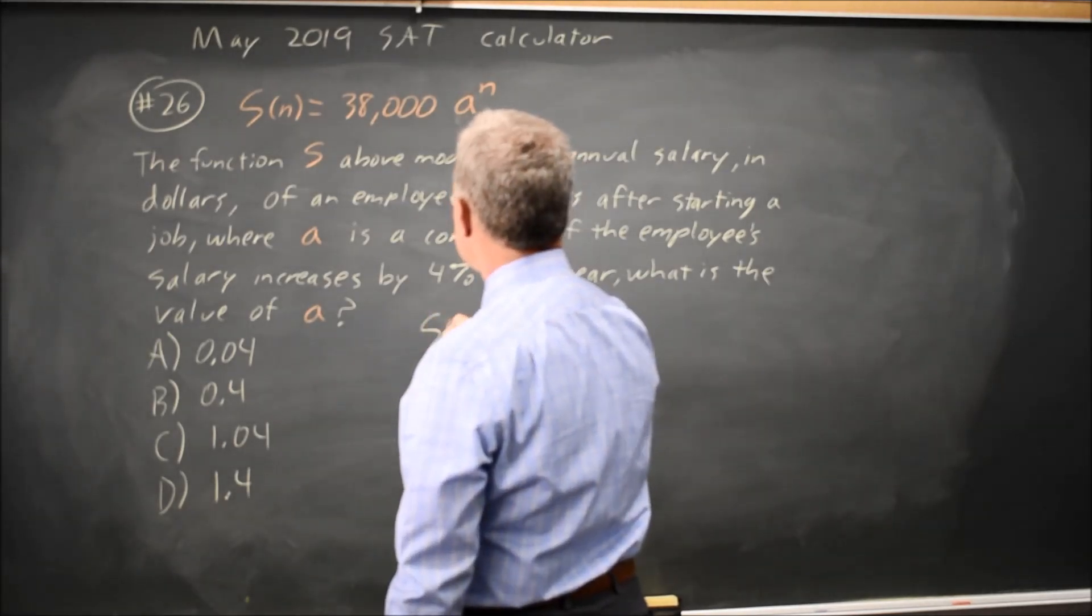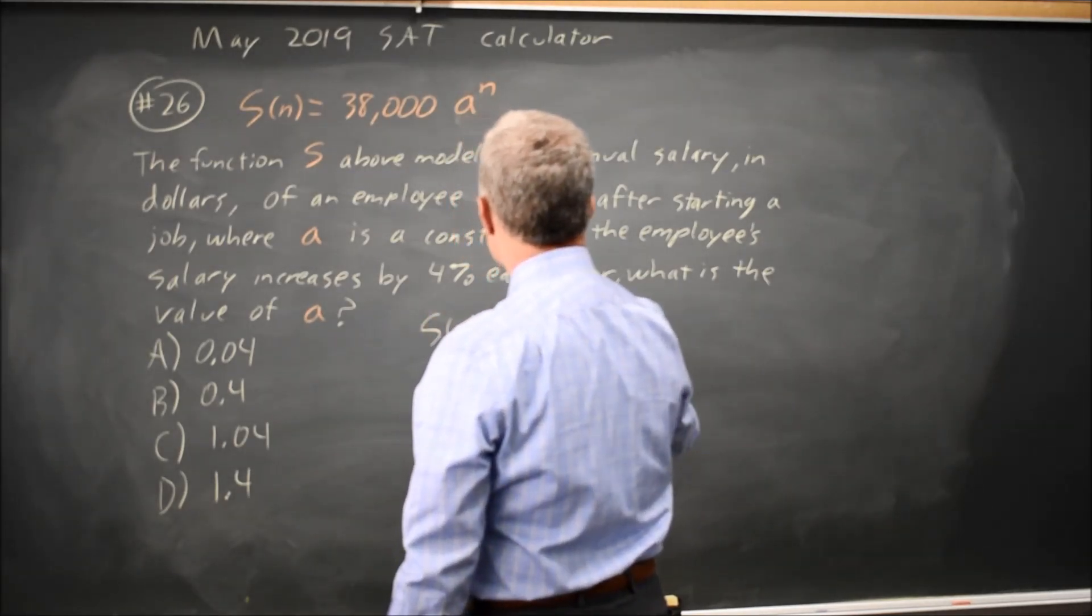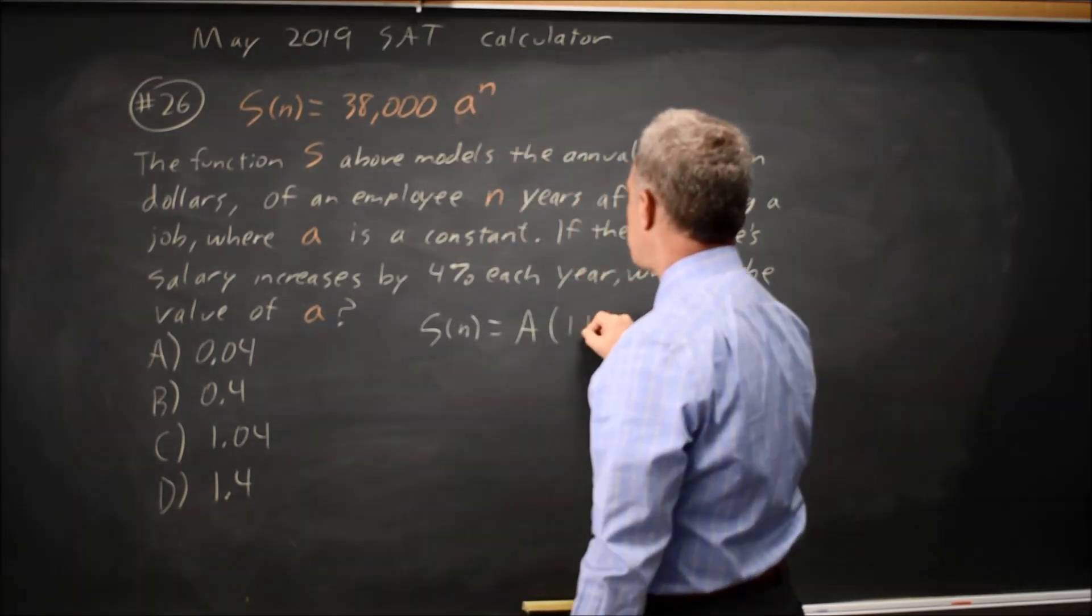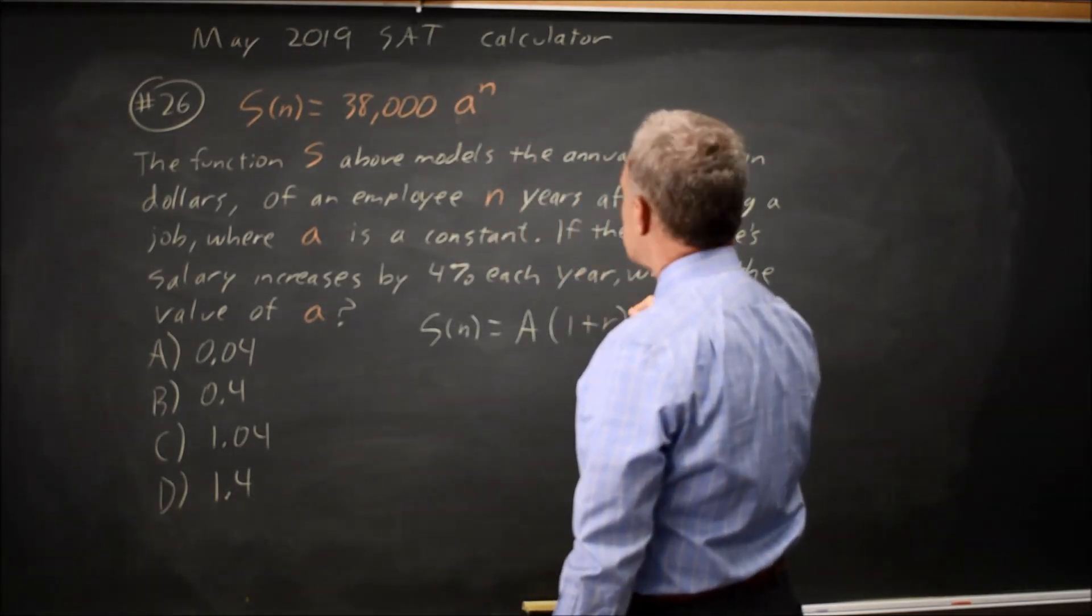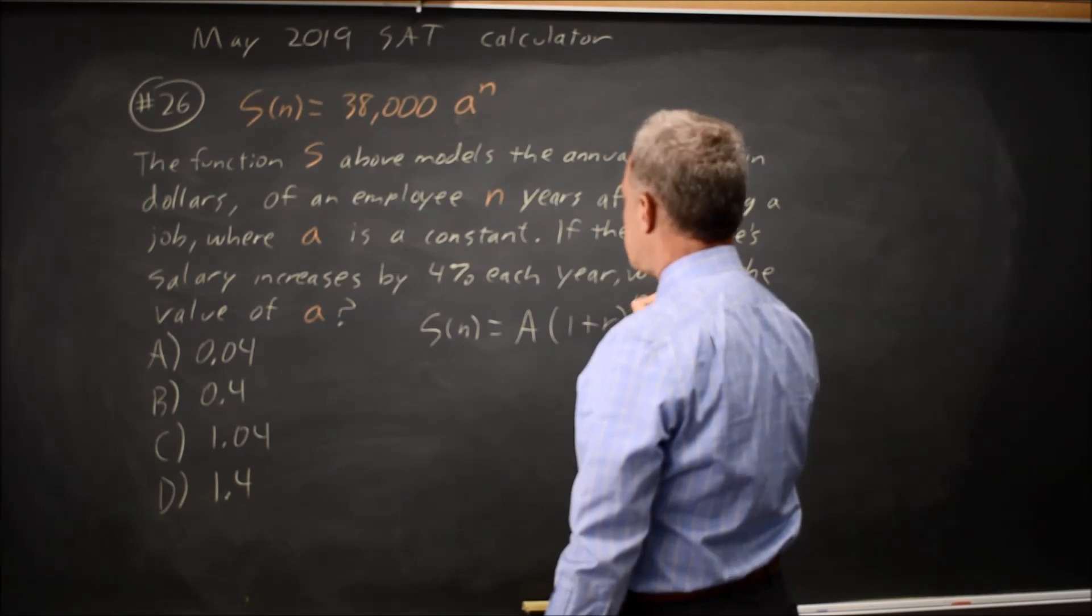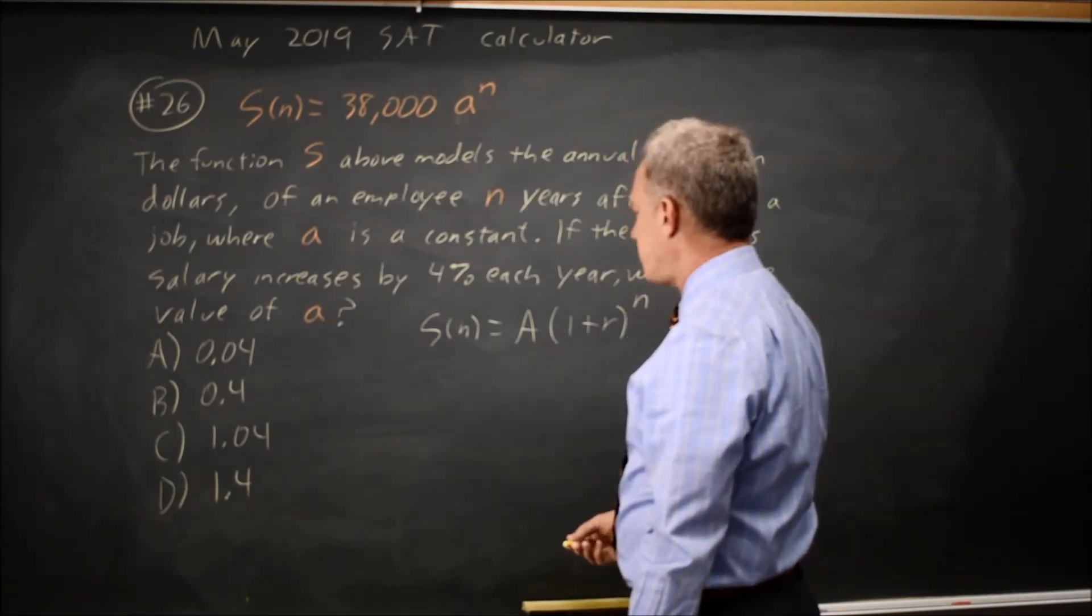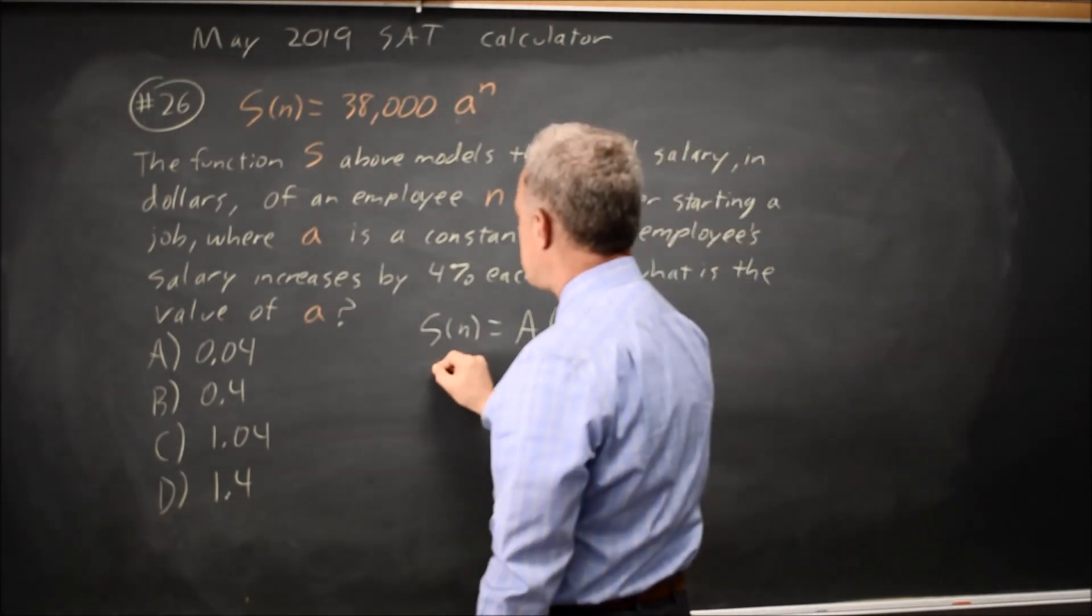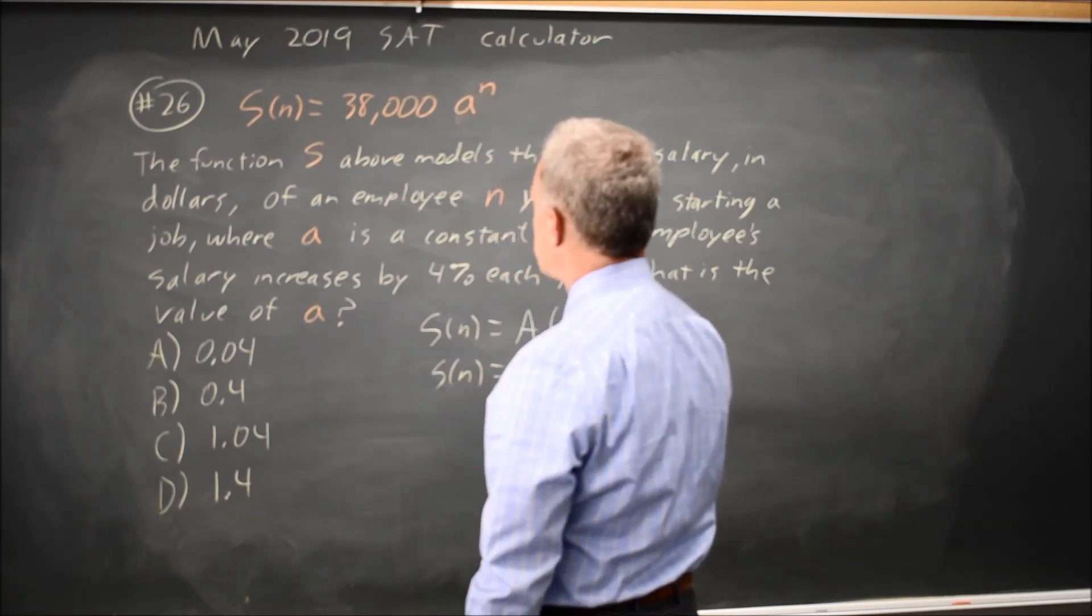For exponential growth, we have S of N equals your initial amount times 1 plus R to the N, where N is the number of years and R is the interest rate. So S of N equals your initial amount,